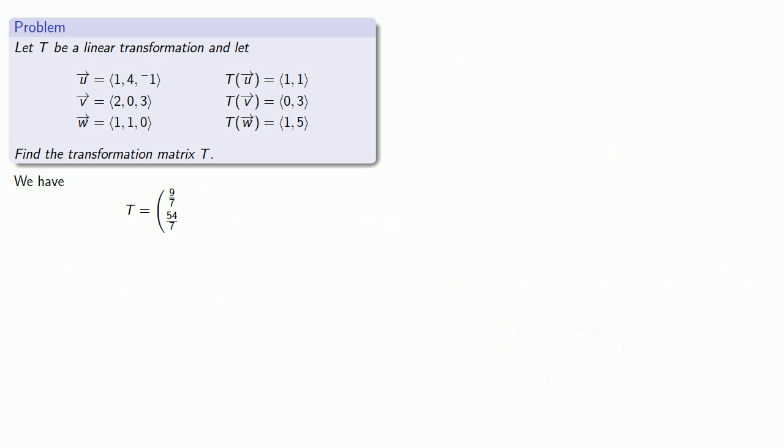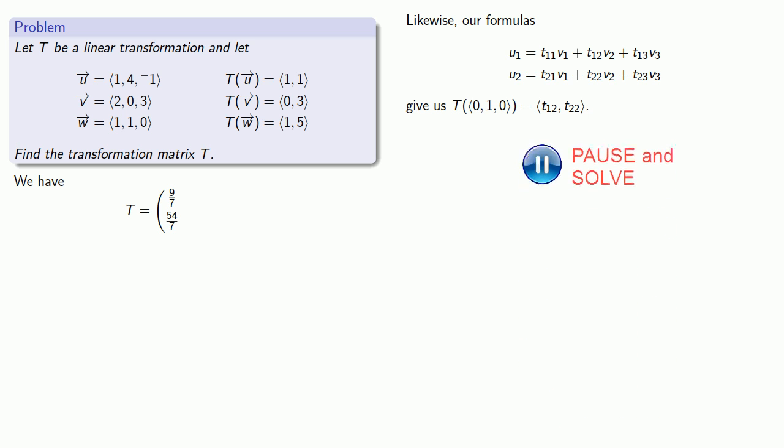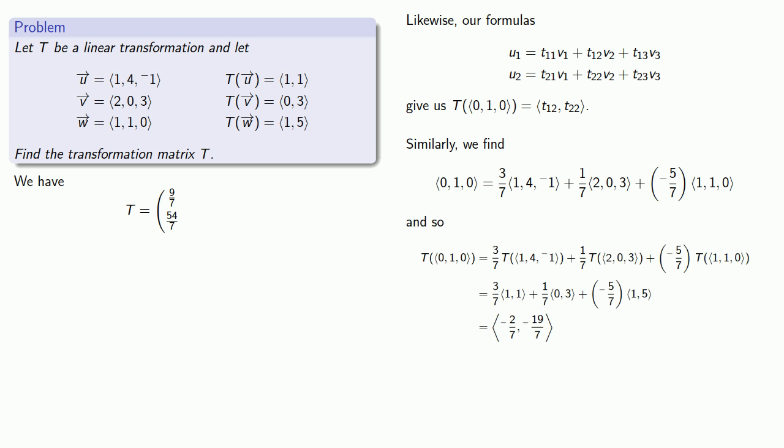By the same reasoning, the transformation applied to the vectors (0, 1, 0) will give us the entries in the second column of our transformation matrix. So we'll express (0, 1, 0) as a linear combination of our vectors U, V, and W, which allows us to determine what the transformation does to this vector. And we get our second column in our transformation matrix.